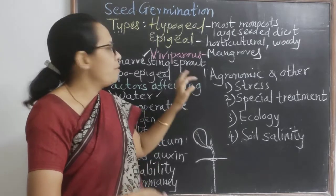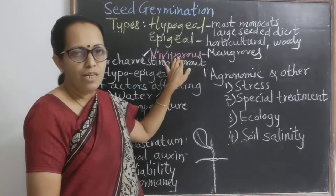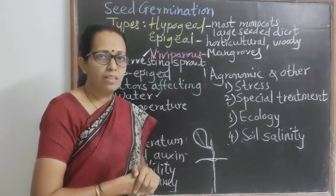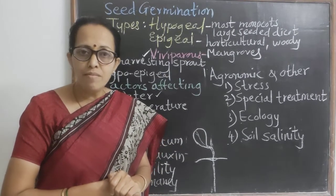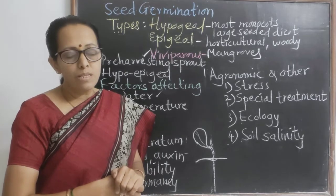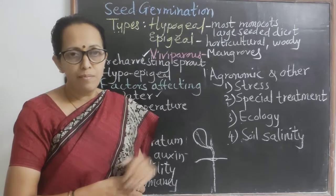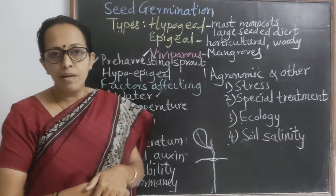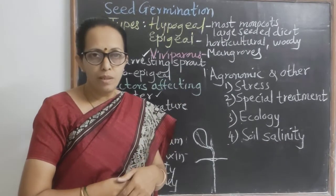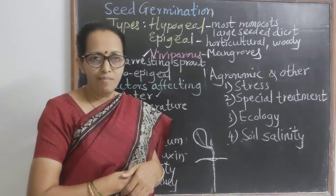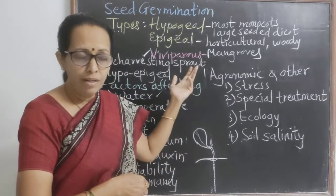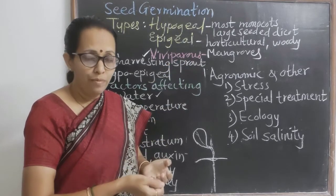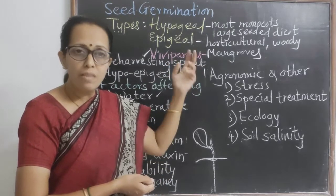The next type is viviparous germination. In animals we also use the terms oviparous and viviparous — oviparous meaning egg-laying, while viviparous refers to animals giving birth to young ones that grow inside the mother's womb. Similarly, in plants, seeds germinate inside the fruit.